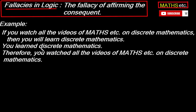The conclusion says: therefore, you watched all the videos of Maths.etc on discrete mathematics — meaning you learned discrete mathematics by watching Maths.etc videos. But this is not true. You don't necessarily have to watch Maths.etc videos to learn discrete mathematics — for example, you could have read Rosen's book and learned discrete maths from that. So our reasoning here contains a fallacy.